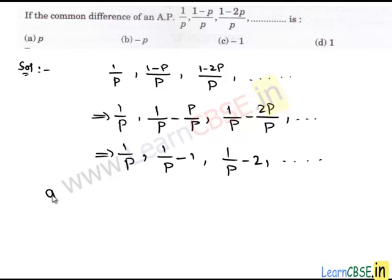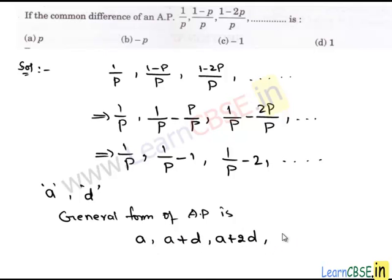If A is the first term and D is the common difference, then the general form of an AP is A, A plus D, A plus 2 times D, A plus 3 times D, so on.